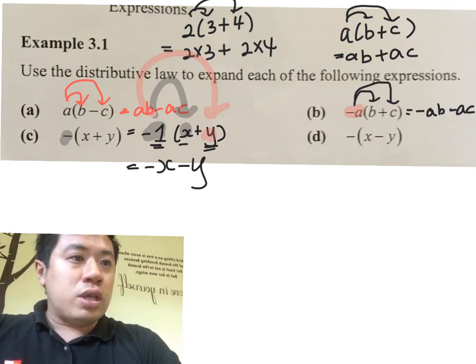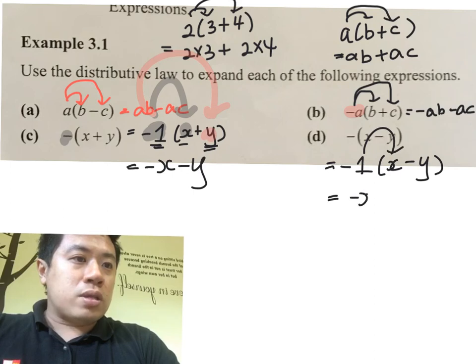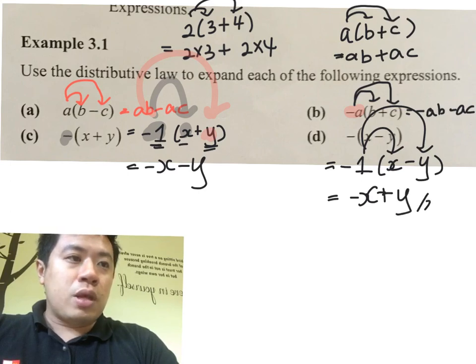Lastly, for D, I can treat it as negative 1 multiplied to x minus y. Negative 1 to x gives negative x. Negative 1 to negative y—negative and negative is positive.